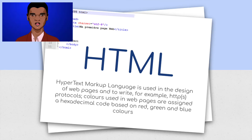HTML, hypertext markup language, is used in the design of web pages and to write, for example, HTTPS protocols. In the context of this chapter, colors used in web pages are assigned a hexadecimal code based on red, green, and blue colors.